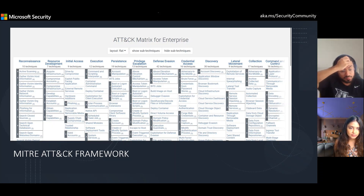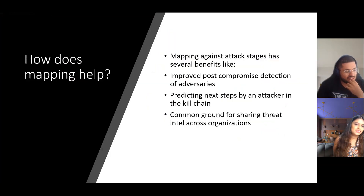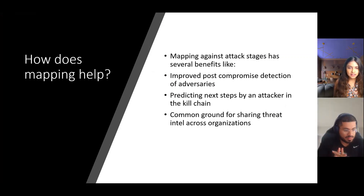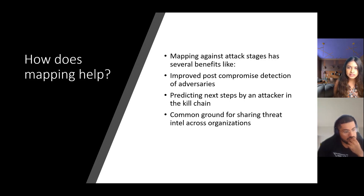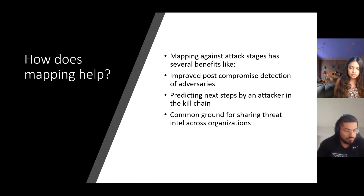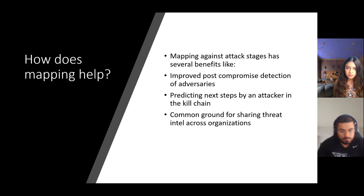Could you go a little bit into mapping — how it works and the benefit of it? The mapping has several benefits. It improves post-compromise detection of adversaries. If you already know that there is an adversary in your network and you know they got in through exploiting a public-facing application, you're able to predict what the next steps in the kill chain might be. You can also look back and trace the steps the adversary took as they moved through the systems, making it easier to find them, stop them, and prevent them from moving any further.